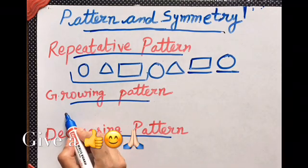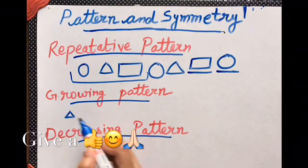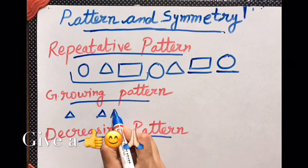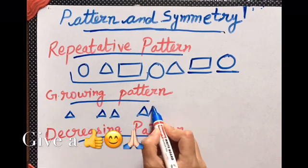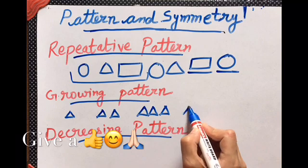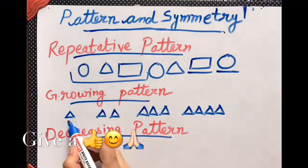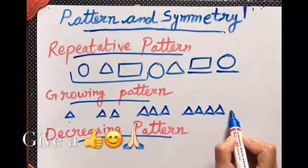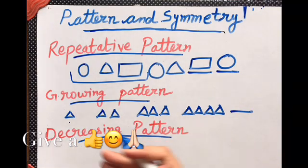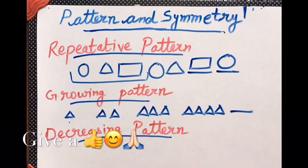Now growing patterns, like we have already done. One triangle, two triangles, three triangles, four triangles, and then five. So one, two, three, four, then five, then six. This way it is growing, increasing.